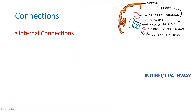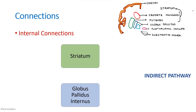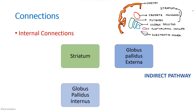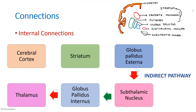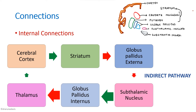In the indirect pathway, other than the striatum and the globus pallidus internus, we have two other nuclei involved: the globus pallidus externa as well as the subthalamic nucleus. Only the subthalamic nucleus is excitatory; all others are inhibitory. Again, when the cerebral cortex stimulates the striatum, the striatum will inhibit the globus pallidus externa. The globus pallidus externa will then inhibit the subthalamic nucleus less, causing disinhibition of the subthalamic nucleus, which will excite the globus pallidus internus more. The globus pallidus internus will then inhibit the thalamus more, so the thalamus will excite the cerebral cortex less. That is why the indirect pathway is called inhibitory.